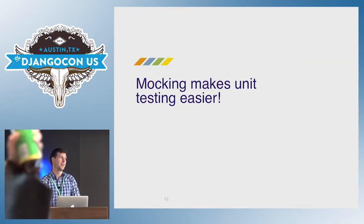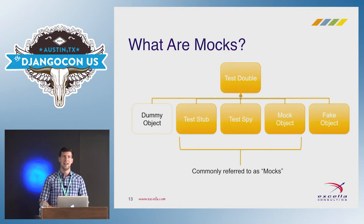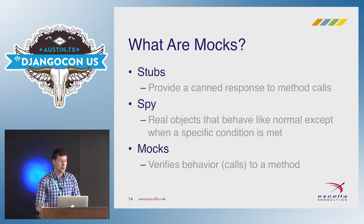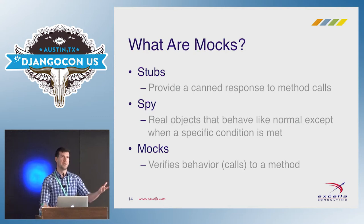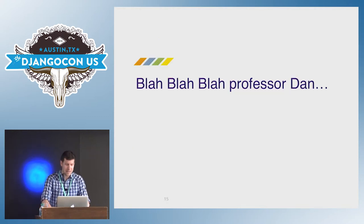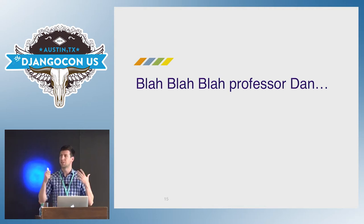Mocking makes unit testing easier. So what are mocks exactly? Mocks form a strange subclass of a thing called a test double in testing. We typically have test stubs, test spies, or mock objects. I'll use these interchangeably and just call them mocks. A test stub provides a canned response to a method call. A spy is a real object that behaves like a real object until a certain condition is met, then it does something else. A mock helps us verify that something was called or verify a behavior. But honestly, what helps is understanding the types of problems that mocking helps us solve.